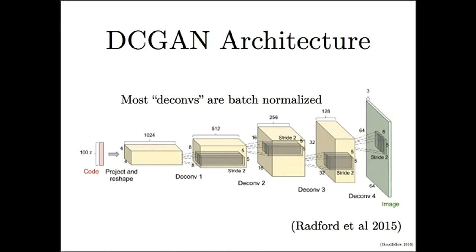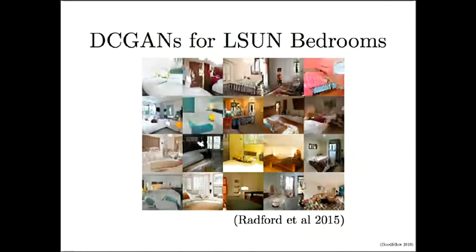Convolutional generative adversarial networks work very well for generating small images from restricted domains. Here are some examples of bedrooms generated by DC-GANs after training on a dataset consisting only of bedrooms. These images are somewhat low resolution but you can see that they actually contain doors, windows, quilts, pillows, headboards for the beds, lighting, and that kind of thing.